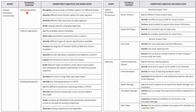You should be able to identify piping operations: recognize pressure drop correlation options for different phases, identify different heat transfer operations for pipe segments and flow assurance, and build a piping network. This was part of the MCQs when I took the test, but it could also be in the lab work.